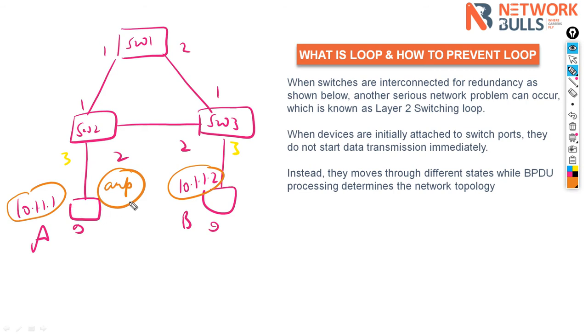It means that 10.1.1.1 should know the MAC address of 10.1.1.2. This user will generate an ARP request which will be received by switch two on port number three. Now switch two will make a MAC address table and update an entry that on port number three I'm learning MAC address A.